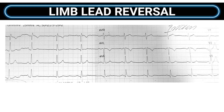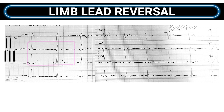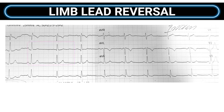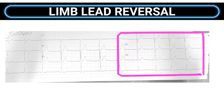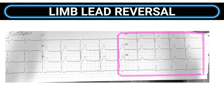In this scenario, lead one will appear predominantly negative, similar to dextrocardia. However, the key difference lies in the other limb leads. For limb lead reversal, look at leads two and three: lead two, which normally looks at the heart from right to left, will show a low amplitude or even an inversion of the usual waveform if the leads are reversed. Lead three often becomes disproportionately positive.